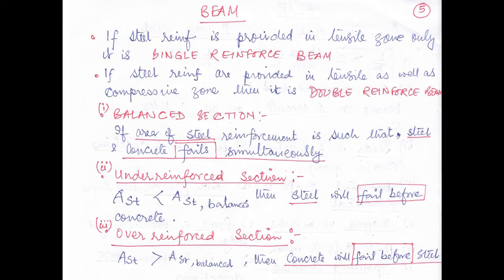Good morning friends. Today I will discuss some points about the beam. What is a single reinforced beam? If the steel reinforcement is provided in the tensile zone only, it is called a single reinforced beam. But if the steel reinforcement is provided in the tensile as well as the compressive zone, it is known as a double reinforced beam.